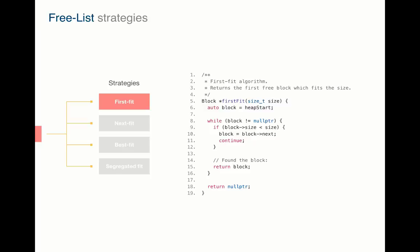So we traverse all the blocks, starting at the beginning position, and if the size of the analyzing block doesn't fit, we just go to the next block. Otherwise, we return the found block, and it can be reused. If nothing is found, we return the null pointer, and this is the sign that we have to request more memory from the operating system.